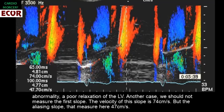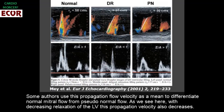In another case, we should not measure the first slope. The velocity of this slope is 74 cm per second, but the aliasing slope measured here is 47 cm per second. Some authors use this propagation flow velocity as a means to differentiate normal mitral flow from pseudonormal.